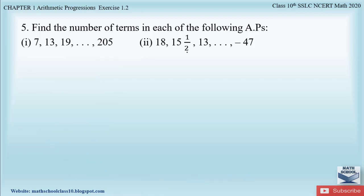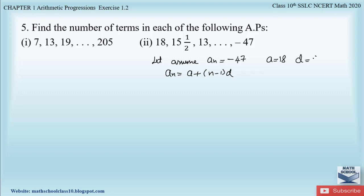For the second part of question five, we assume the nth term equals −47. Using the formula a_n = a + (n − 1) × d, the first term a equals 18. The common difference d equals a2 minus a1, where a2 is 15 and a half, which is 31/2, minus a1 which is 18.